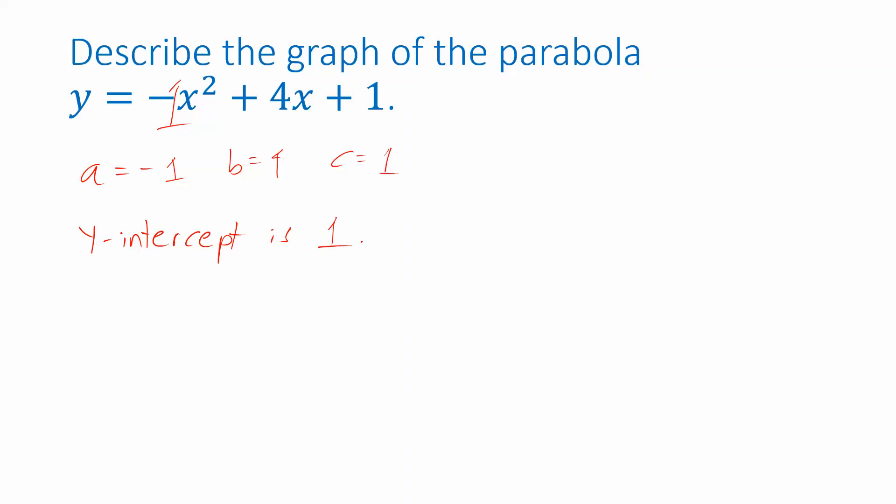And then the y-intercept we know is the c value. It's 1. That's where we cross the y-axis. The parabola has a coefficient of x² that's negative. a is negative. So the parabola opens downward.